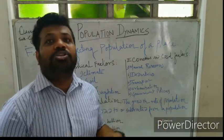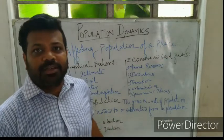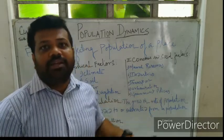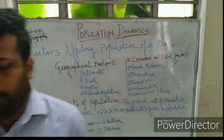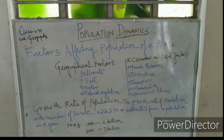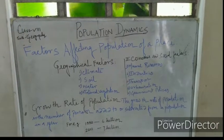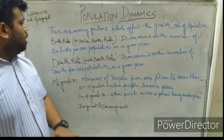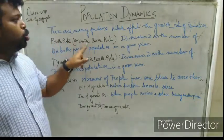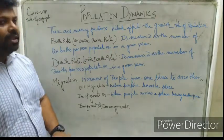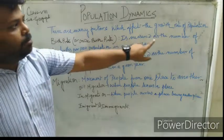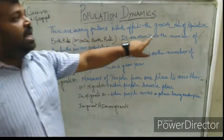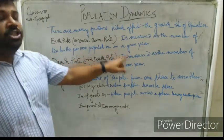To understand the growth rate of population better, we need to know several terms. The first is birth rate, or crude birth rate. It is measured as the number of live births per thousand population in a given year. Live births means the number of babies who are born alive.